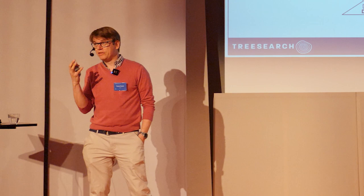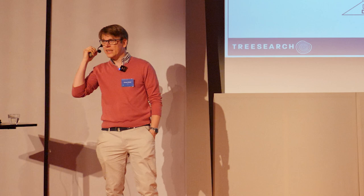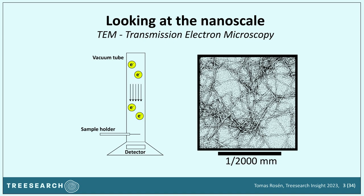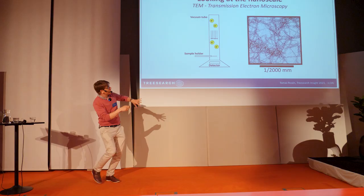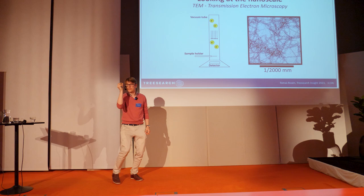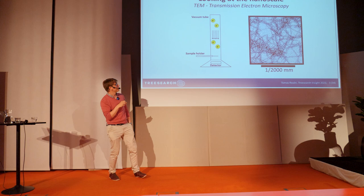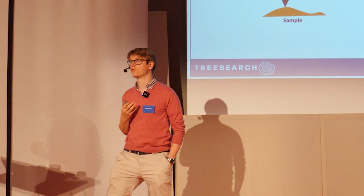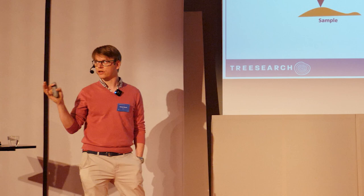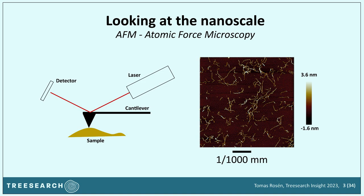But we do have techniques to look at really small scales — even atomic scale resolution. Electron microscopy, for example, accelerates electrons through a vacuum tube through your sample and collects them on a detector. The electrons have an associated wavelength much smaller than visible light, so you don't get the same diffraction problems. We also have atomic force microscopy, which works on a completely different principle: a cantilever is scanned over your sample, measuring height via a laser and detector. You can image cellulose nanofibers as a height map, and also reach atomic resolution.